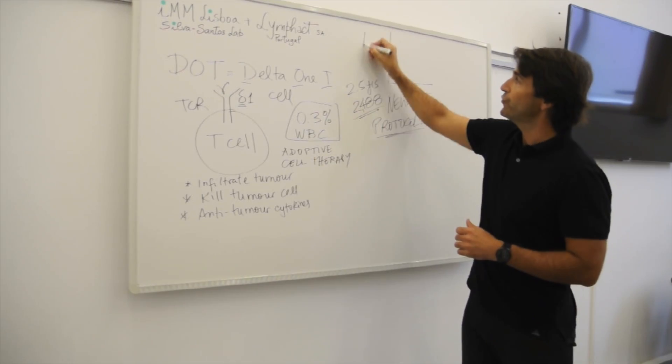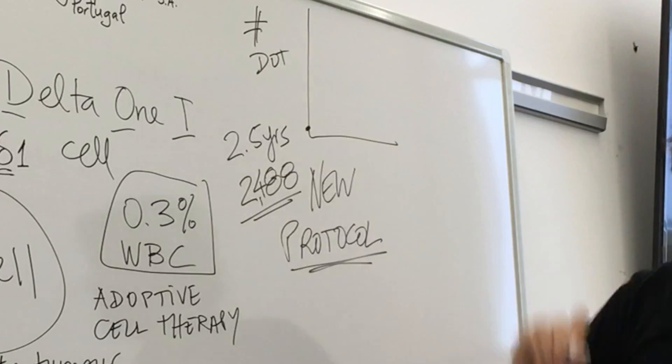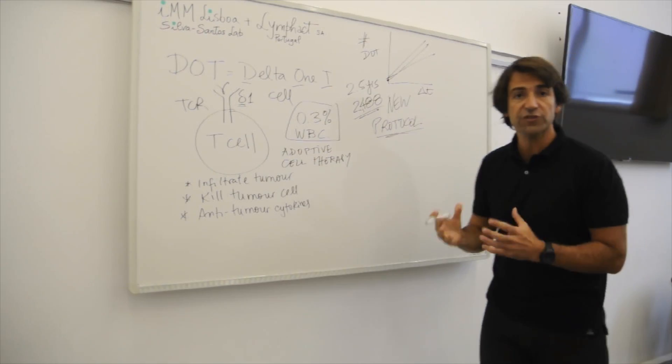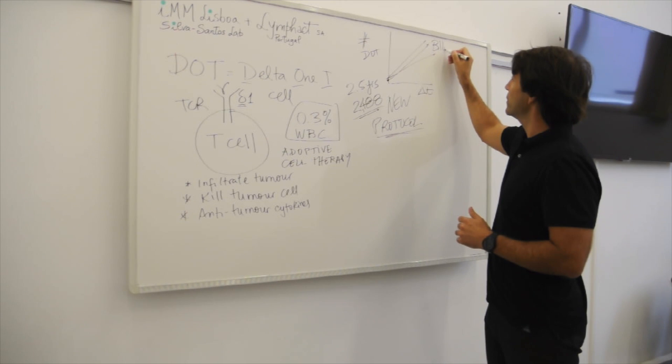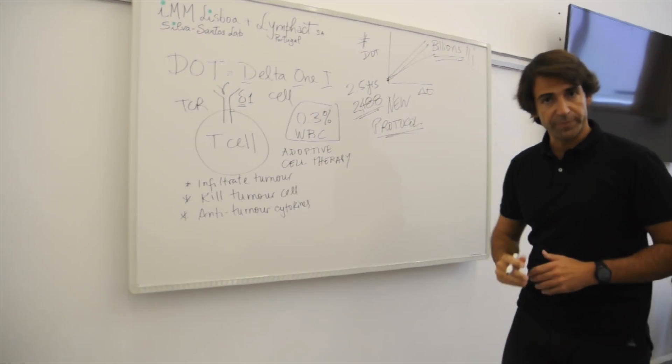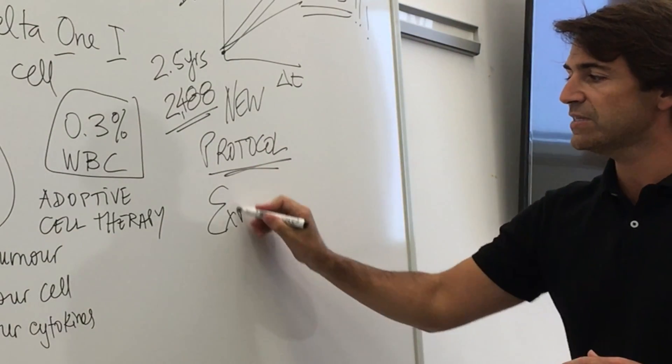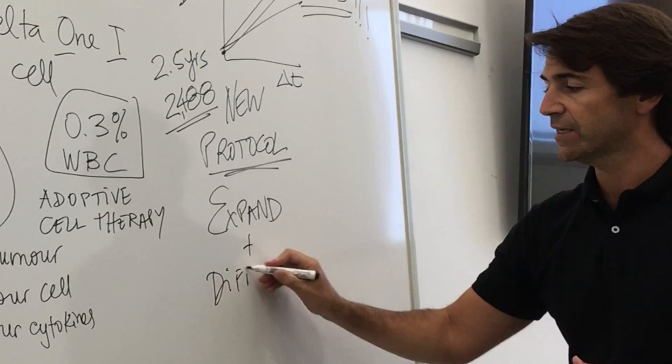So essentially, if we look at the number of DOT cells, we start with a very limited amount of cells and they increase with time in vitro in our culture media to get the billions required for adoptive cell therapy. So not only do we expand cells, this is expansion, getting a lot of cells, but we also differentiate cells.